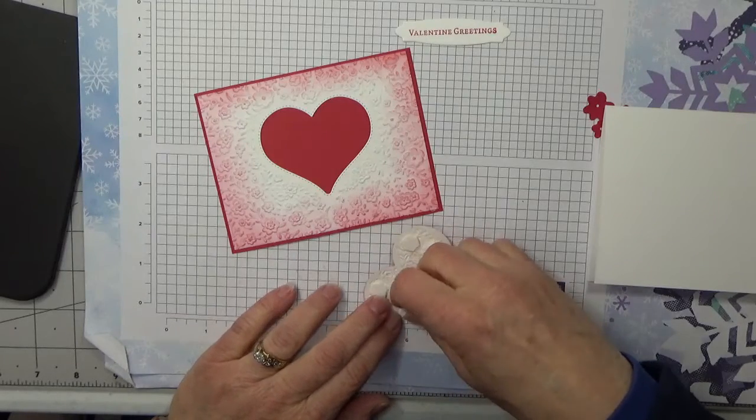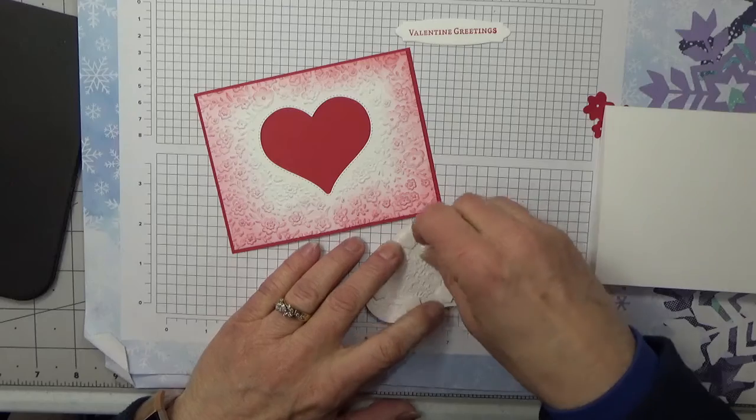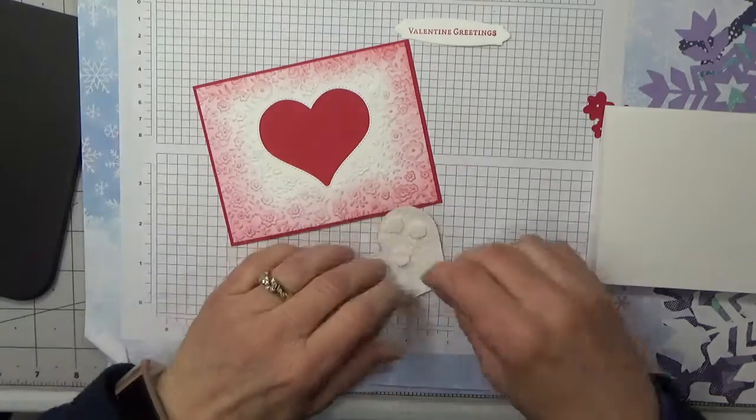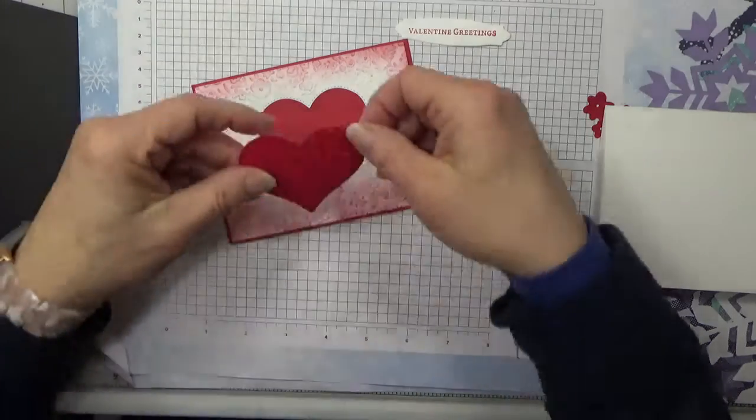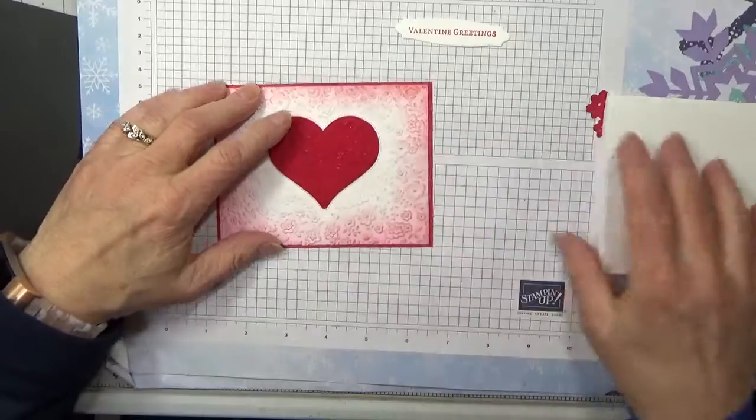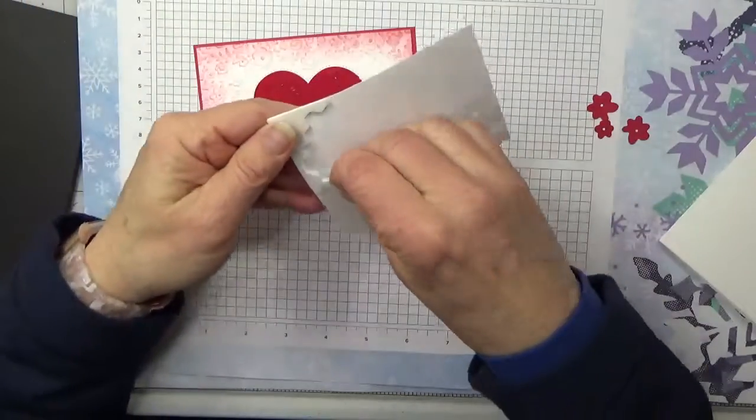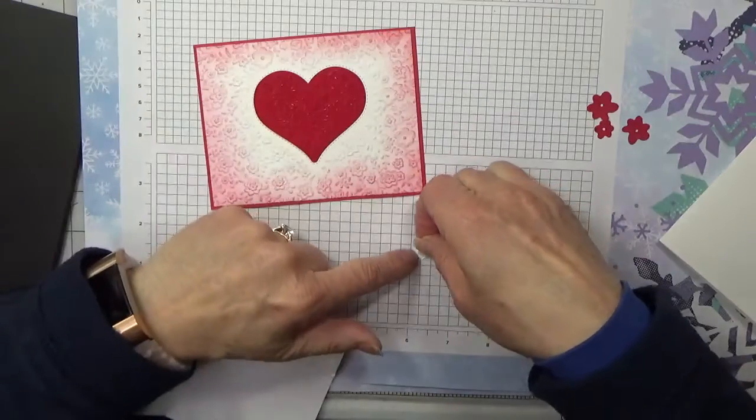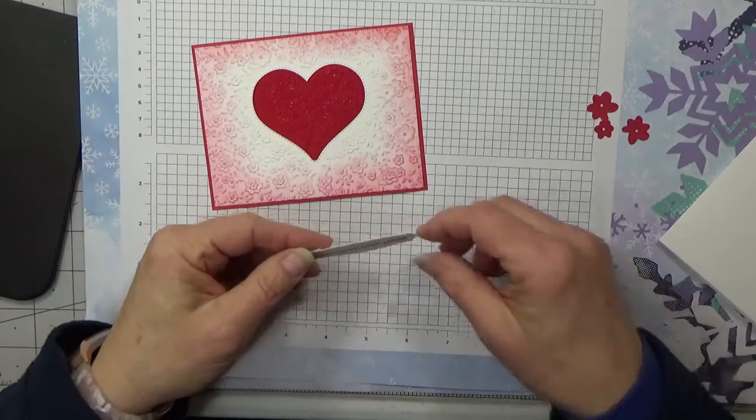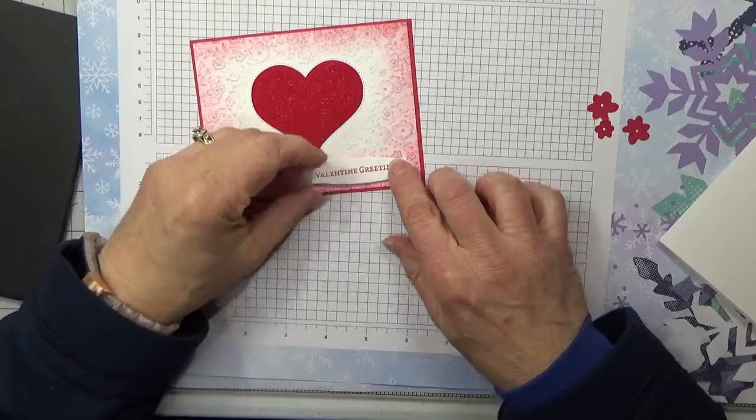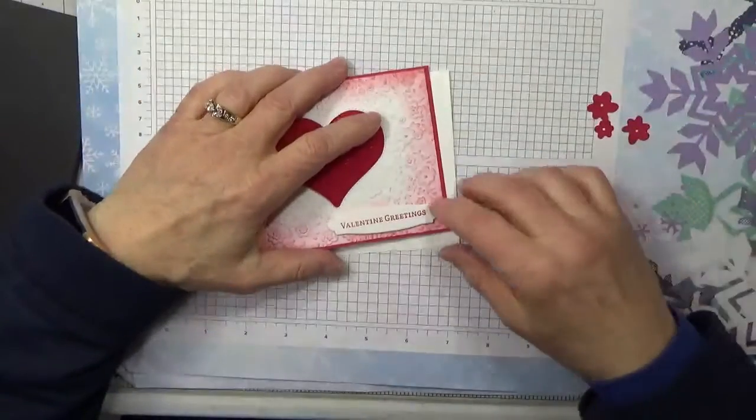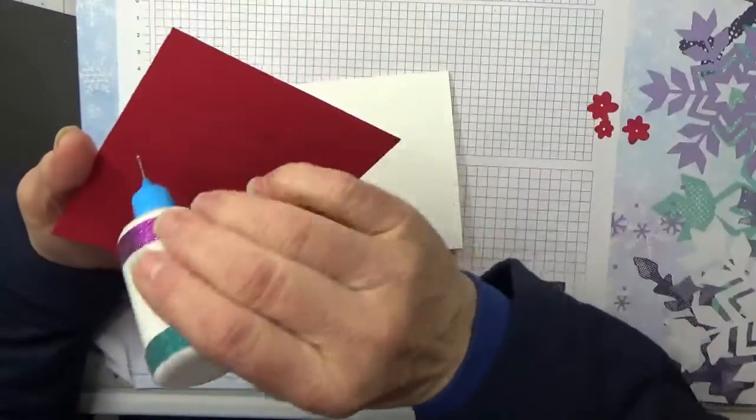In fact, I might put one more there in the middle so it doesn't flatten out in the middle. And I'm just going to set this right down as an inlay. Okay, and then I have a couple dimensionals for my sentiment. Once you get all the pieces and parts cut out, this card goes together pretty quickly.